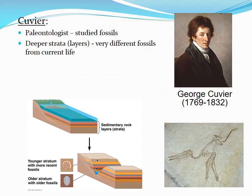These next few slides go over some of the scientists whose ideas Darwin used in his theory of natural selection. You will not be responsible for knowing the names of these individuals, but you will be responsible for knowing how their different ideas contributed to Darwin's thinking. The first one is George Cuvier, a Frenchman who was a paleontologist — he studied fossils.